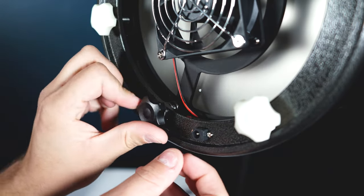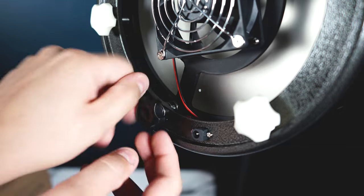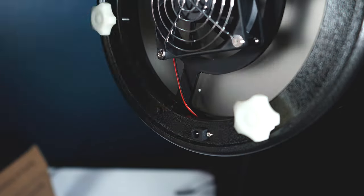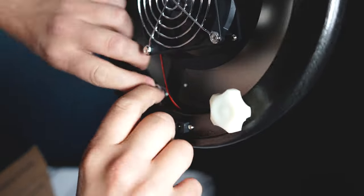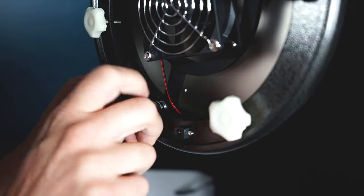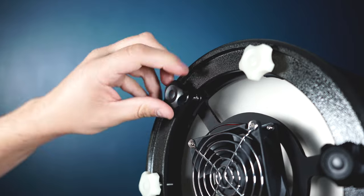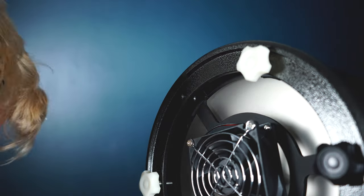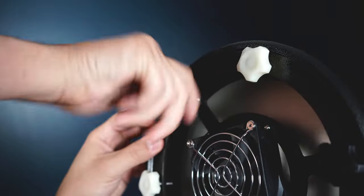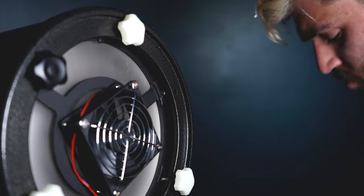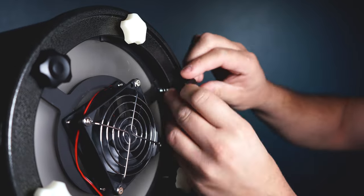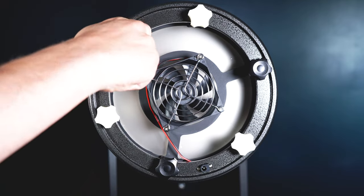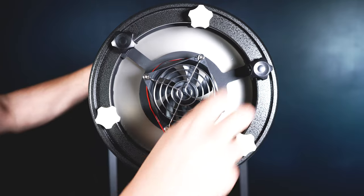The first step is to loosen each black knob by just a couple of turns. Once finished we can start by completely removing that bottom knob. Go ahead and remove the stock spring and then replace it with the upgrade. Tighten that black knob back up but not too tight. Now you can replace the other two collimation springs doing the same process.